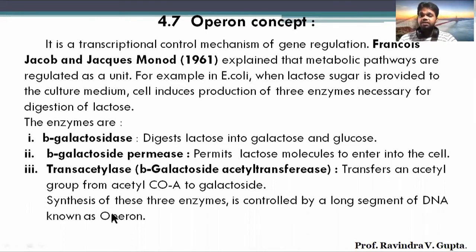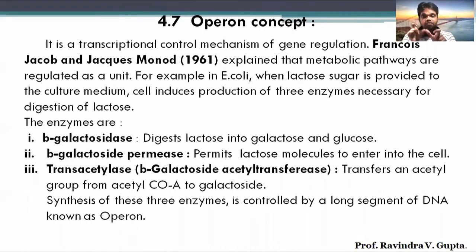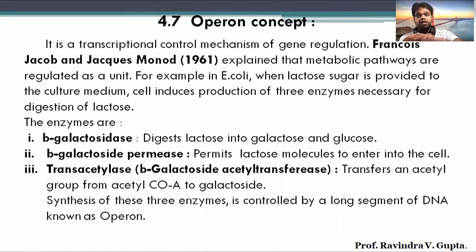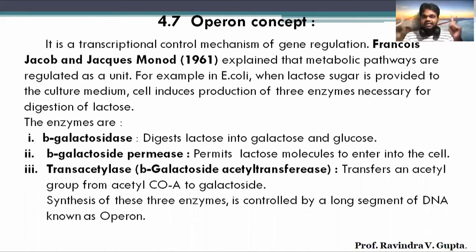The synthesis of these three enzymes in E. coli is controlled by a long segment of DNA. That long segment of DNA inside the E. coli body, which controls the formation of these three enzymes, is called the operon. So all of you should be clear on the meaning of operon — the segment of DNA that controls the metabolic reactions and enzyme formation in the cell is called the operon.